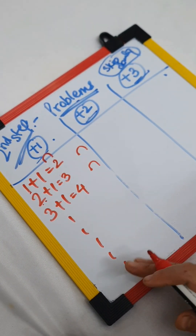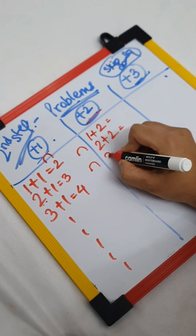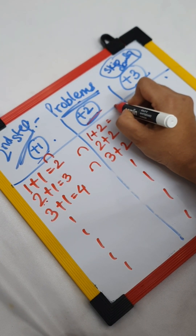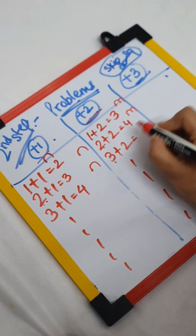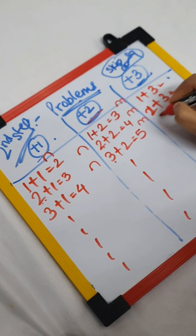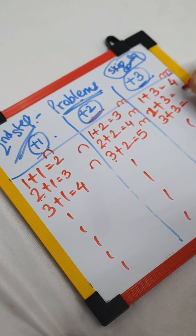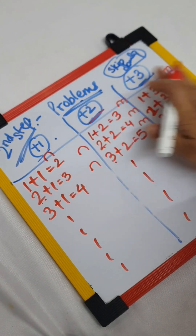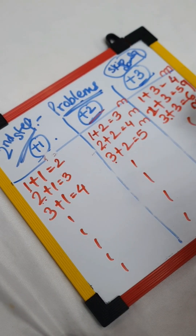Once the child is done with the plus 1 concept, move to the set of plus 2: 1 plus 2, 2 plus 2, 3 plus 2 and likewise. The child will mentally go to number 1 and jump 2 times — 2, 3. Go to number 2 — 3, 4. And 3 becomes 4, 5. Similarly, give 1 plus 3, 2 plus 3, 3 plus 3. They go to 1 and jump 3: 2, 3, 4. Go to 2: 3, 4, 5. Go to 3: 4, 5, 6. Slowly and gradually they'll stop jumping and mentally be able to finish this. This builds fluency in skip counting.